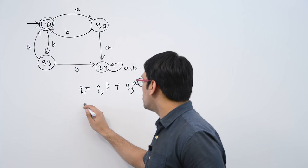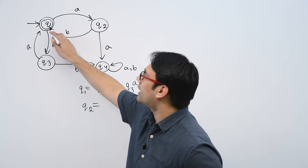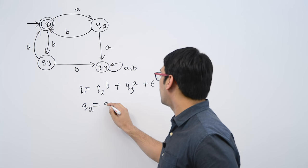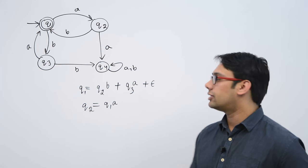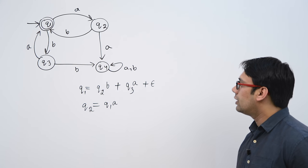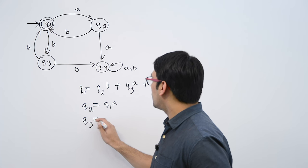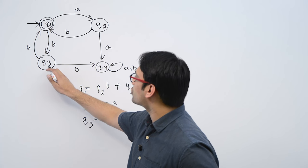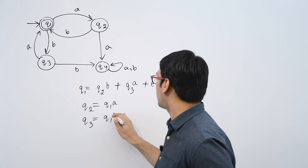If you are at q2, how can you reach q2? To reach q2 you have to see an a from q1, otherwise there is no other method to reach to q2. If you want to reach q3 then you can only reach q3 only if you see b from q1.